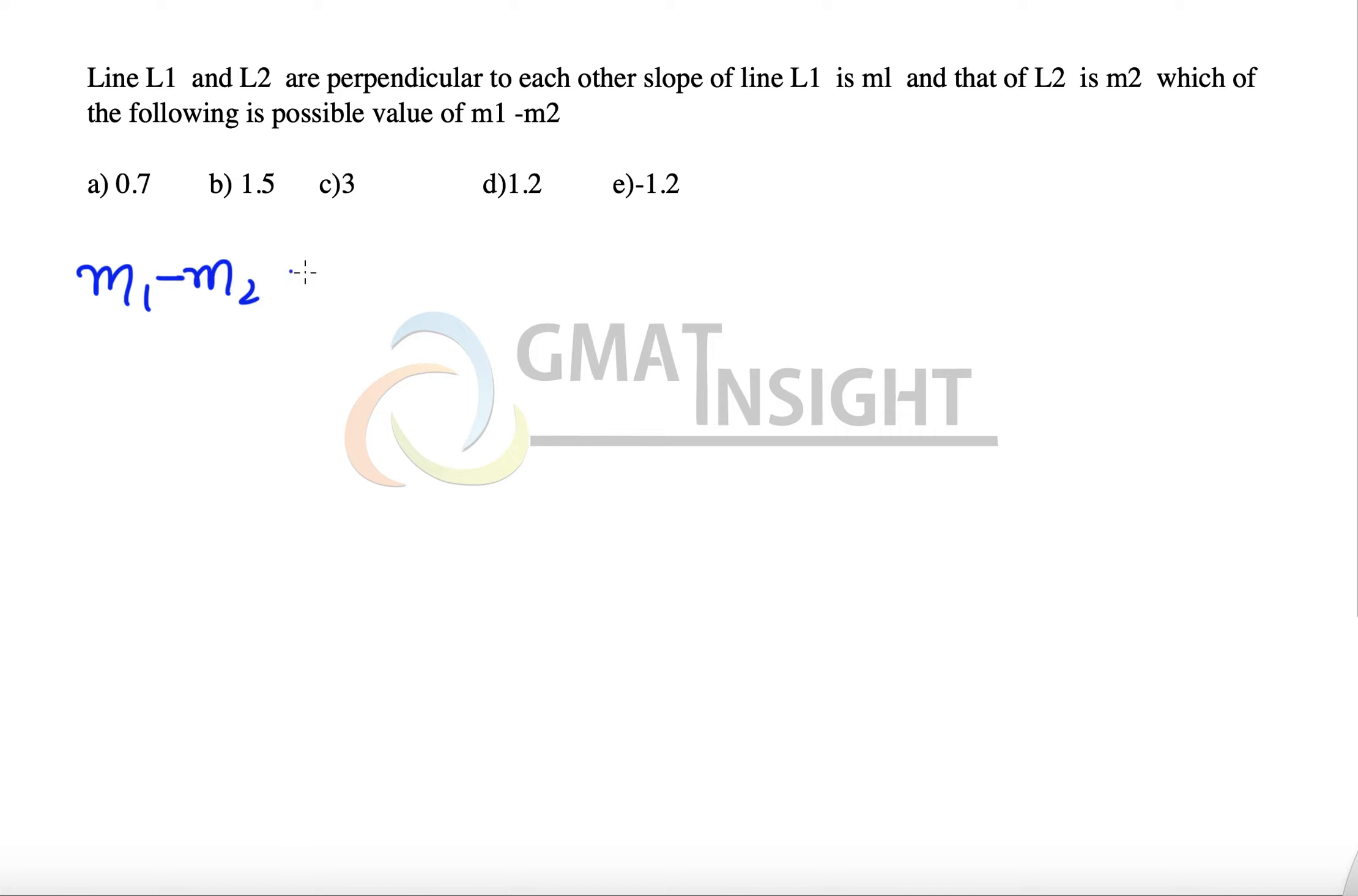We have to find out the possible value of m1 minus m2. We already know the relationship between two perpendicular lines is given by m1 multiplied by m2 equals minus 1. So from this we can find that m2 equals minus 1 over m1.